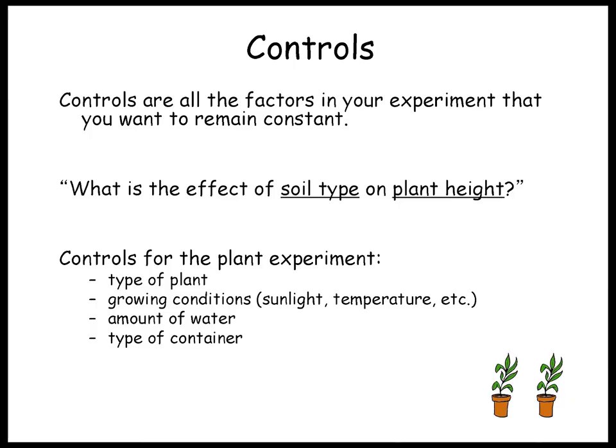In the experiment, you should also have controls. Controls are all the factors in your experiment that you want to remain constant or stay the same. For the experiment about the effect of soil type on plant height, these are the things you want to stay the same: the type of plant, growing conditions, sunlight, temperature, the amount of water, and type of container. You want all these things to remain the same so you can determine if it was the soil type that affected the height of the plant. If you change more than one thing, you won't know what caused the results.